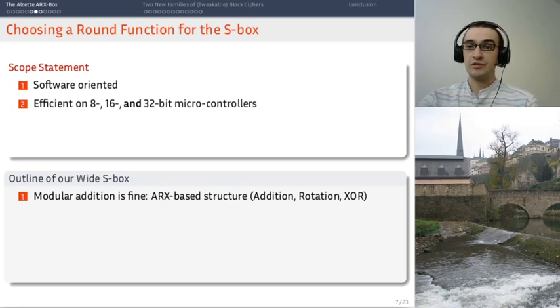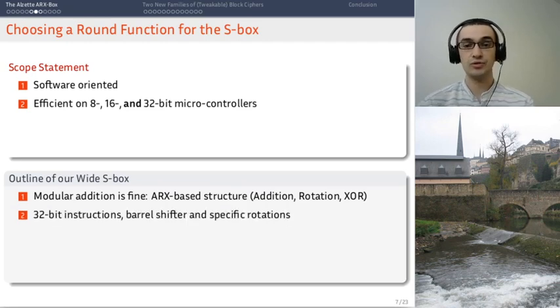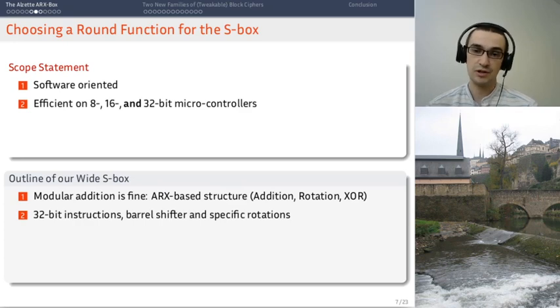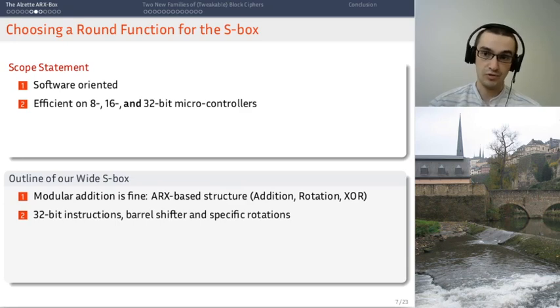We wanted to be efficient on 8, 16 and 32-bit microcontrollers. And that imposes then the use of 32-bit instructions. Because if we used say 8-bit instructions it would have been great on 8-bit microcontrollers, but it would have sucked on 32-bit ones. On the other hand 32-bit instructions can also be very efficient on 8-bit microcontrollers.